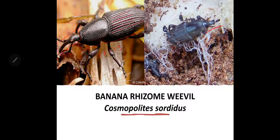Now here are some management practices to control this pest. We can control this pest by obtaining suckers from healthy fields for planting. Clean cultivation and sanitation in the orchard can avoid attacks of the rhizome weevil. If the plot is infected, we can avoid rotting and change the field every year.